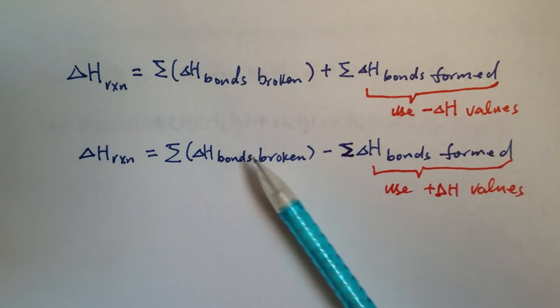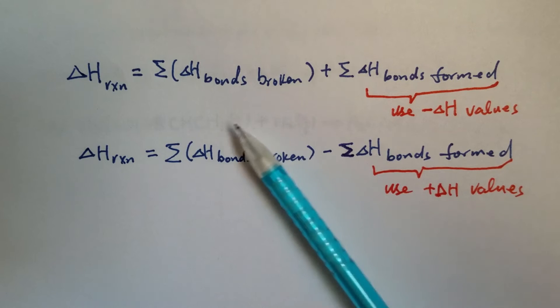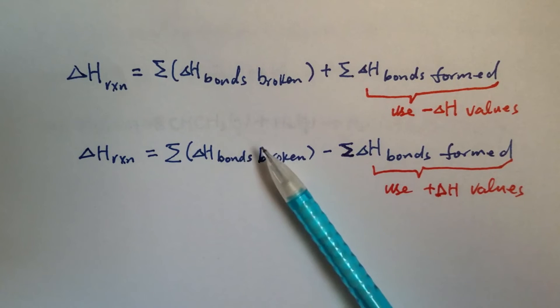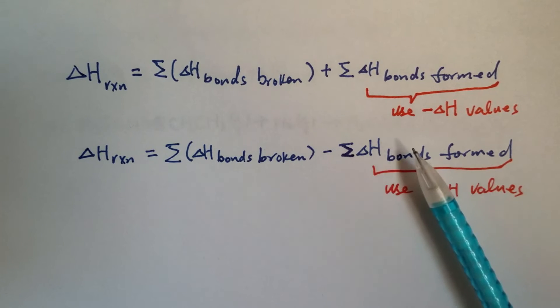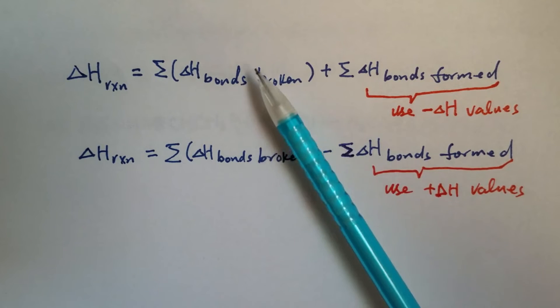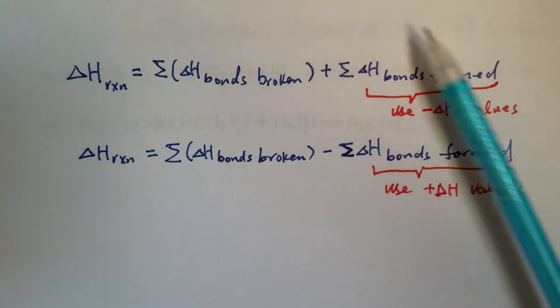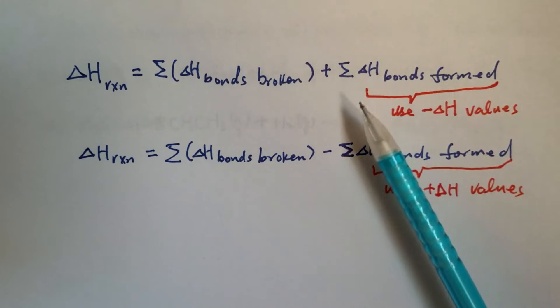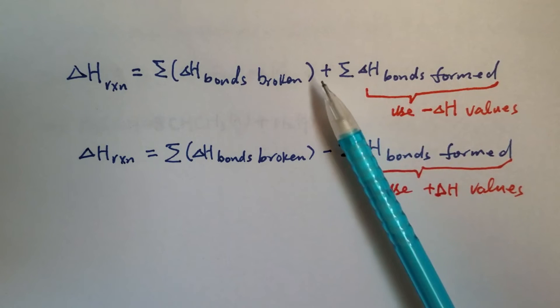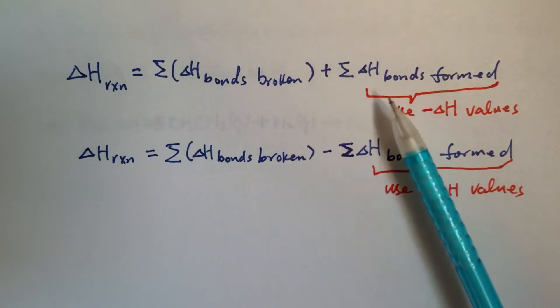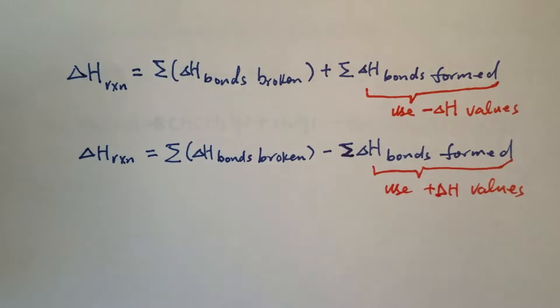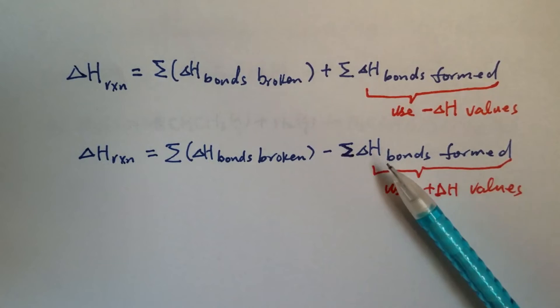Maybe it's easier for you to use the second equation - the sum of bonds broken subtracted by sum of the bonds formed. But when you use this equation, you must always use the positive values for delta H. These two equations are actually the same. Don't be confused. Whichever is easier for you - most people probably find it easier to use the second one.